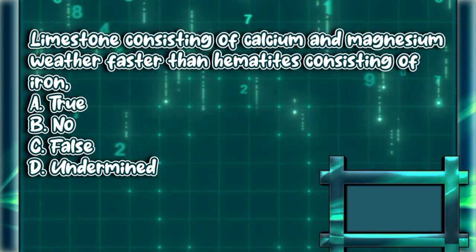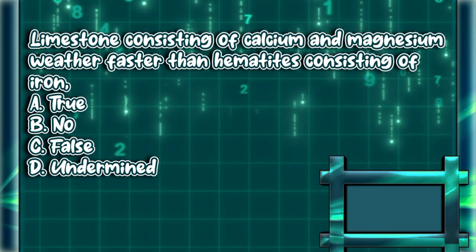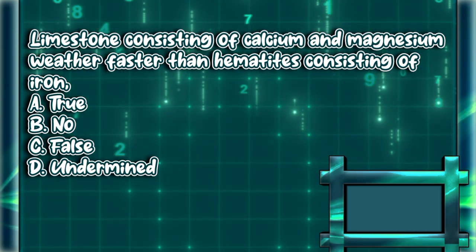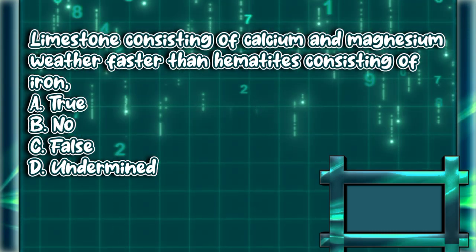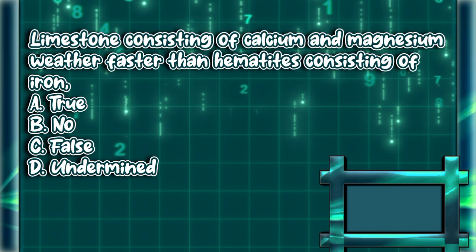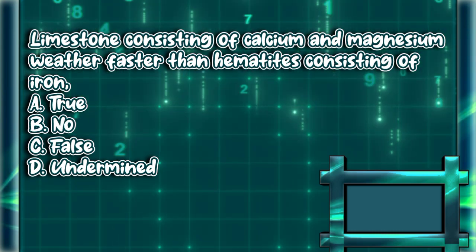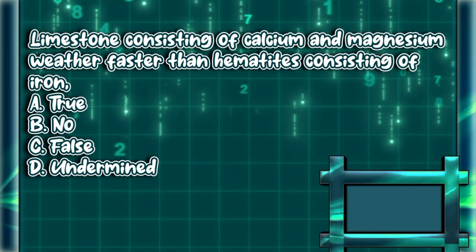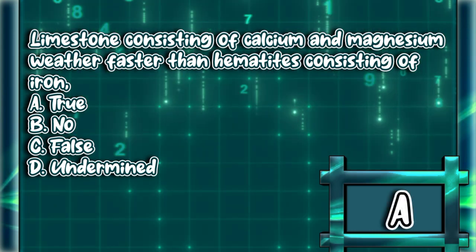Limestone consisting of calcium and magnesium weathers faster than hematites consisting of iron. A) True, B) No, C) False, D) Undetermined. The answer is letter A.